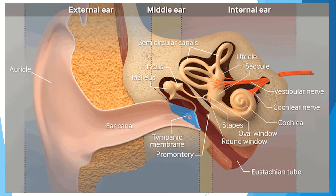There are three ossicles: the malleus, incus, and stapes. They transmit sound-related vibrations to the cochlea. This is the Eustachian tube in the ear — an open tube connecting the middle ear to the throat. It controls the pressure on either side of the tympanic membrane.